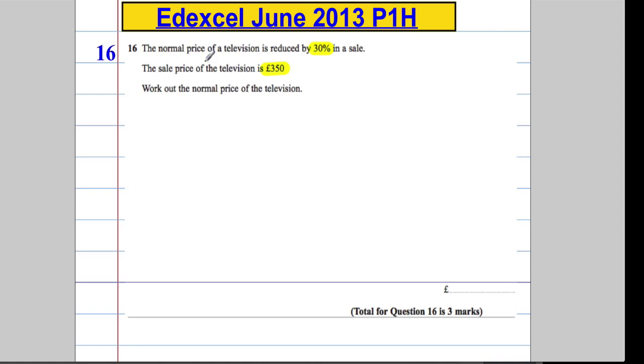The question's a wee bit more involved. The normal price, which would be worth 100%, is reduced by 30%. That means there's 70% left over. If I reduce by 30%, I've got 70% left. It tells me that the sale price is £350.